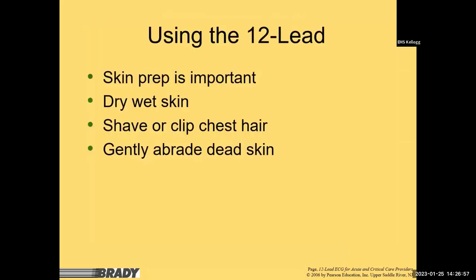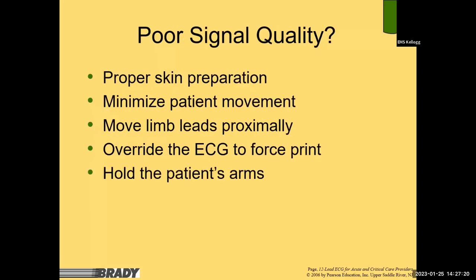Make sure the skin is prepped — that's important for electrodes to stick. Both excessively dry and excessively moist skin cause problems. Dry the skin off if needed, and use a red dot or alcohol prep pad to clean loose skin or dirt. Part of prep includes shaving or clipping chest hair. Poor quality generally comes from poor skin preparation, excessive patient movement, or limb leads placed too proximally — they can be placed just off the shoulder rather than at the wrist, which reduces movement artifact significantly.